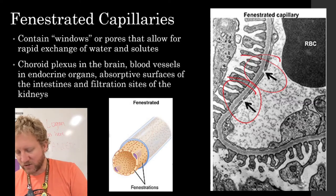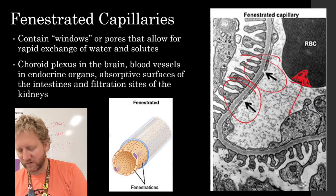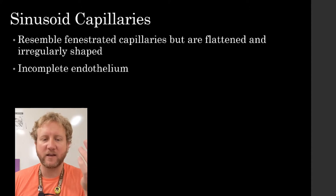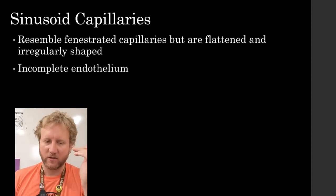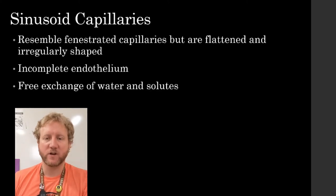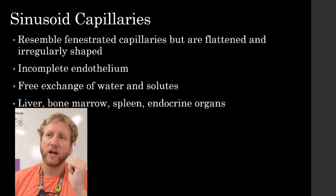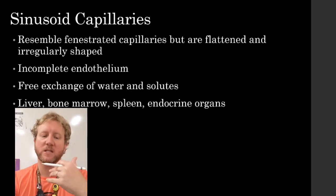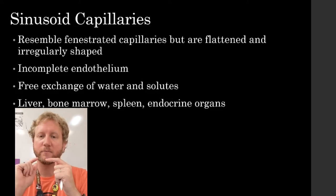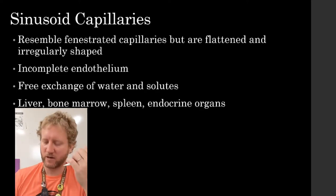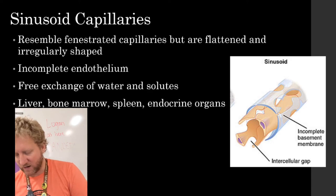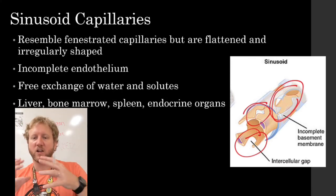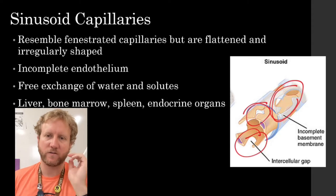Here's a zoomed-in picture showing those fenestrations — little windows that allow substances to pass through much more quickly. As a point of reference, you can see the red blood cell next to the capillary — it looks huge. The third type are sinusoid capillaries. They're like fenestrated capillaries but more flattened, with openings that are irregularly shaped. The endothelium is incomplete, allowing free exchange of water and solutes. Found in the liver, bone marrow — so blood cells can enter the bloodstream — and the spleen, so blood cells can leave the bloodstream.